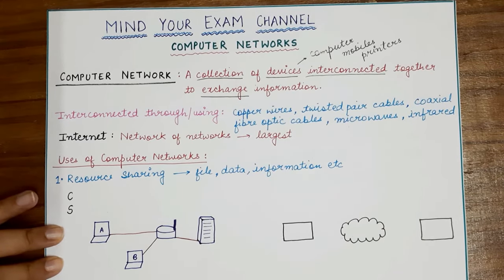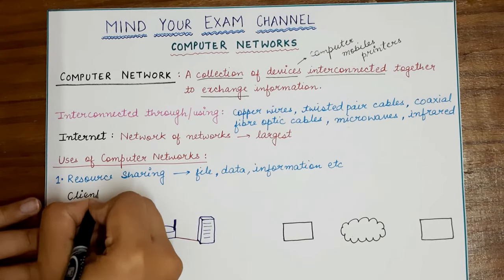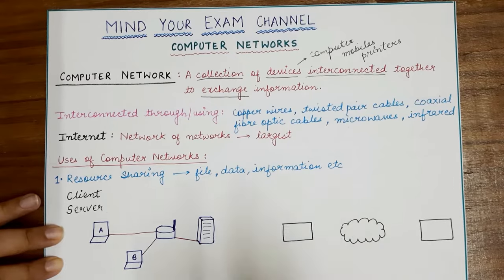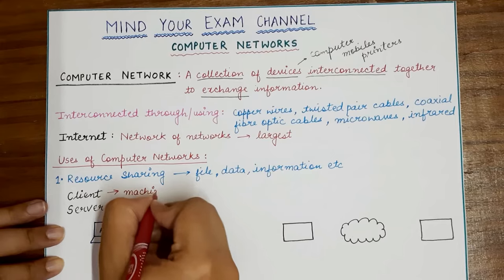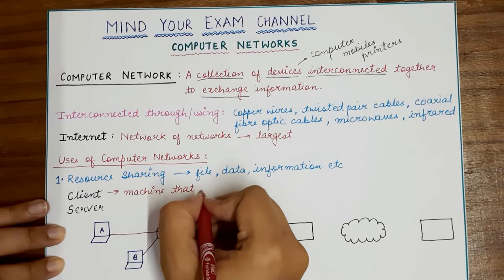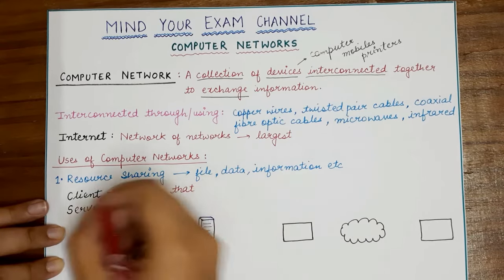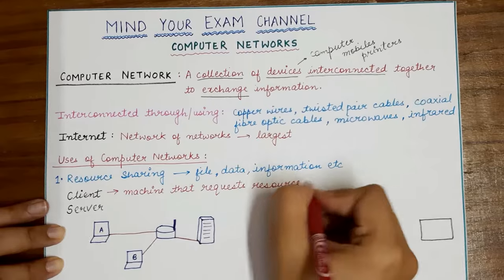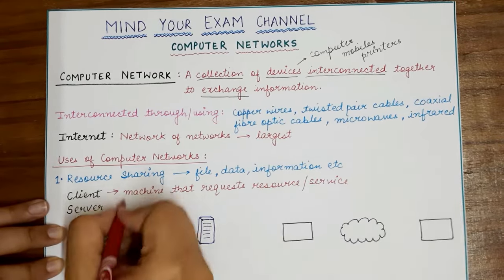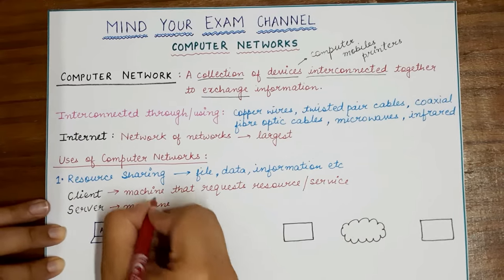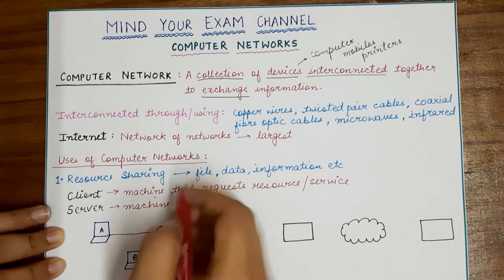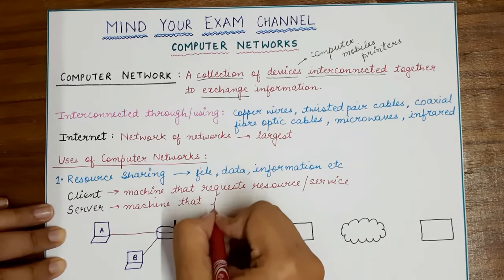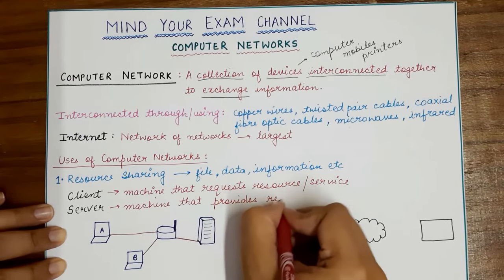Resource sharing includes a very important concept: client and server. The client is the machine — the digital device — that is requesting some kind of resource or service. On the other hand, the server is the machine that provides that service. The client-server architecture is the term we use when devices are communicating in the form of clients and servers. The server is the machine that provides the requested resource or service.